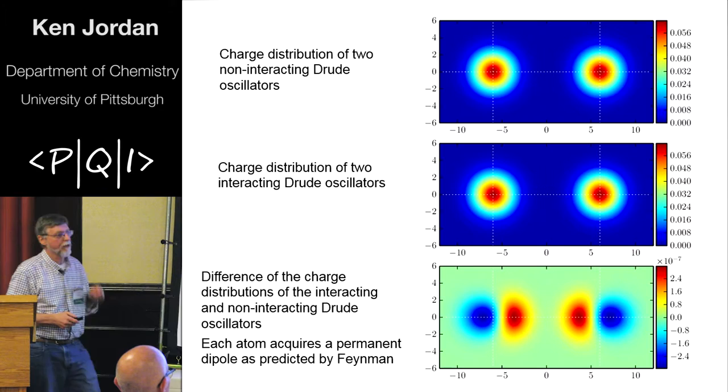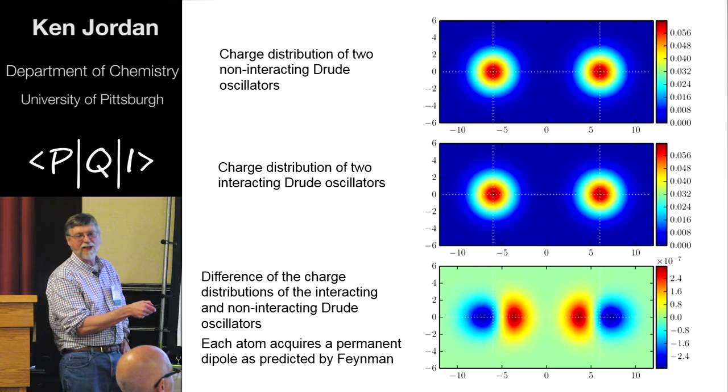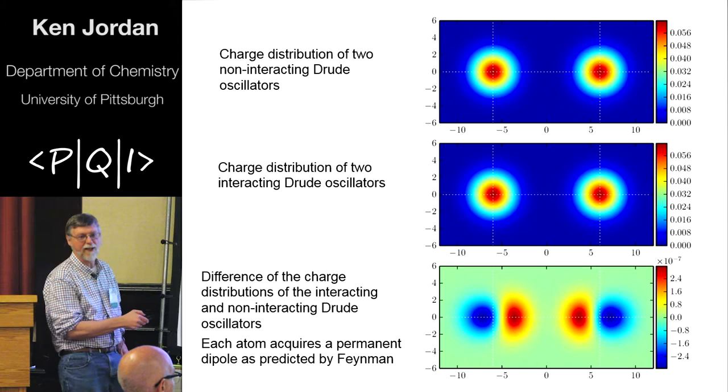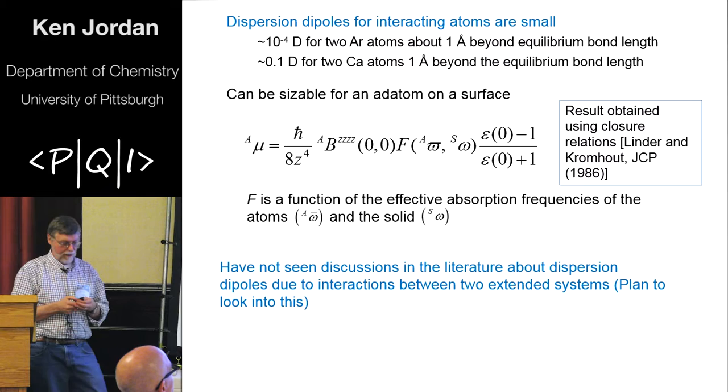Uh-oh. Are you saying three minutes? Okay, here's a picture of the charge distribution of the non-interacting atoms. Now they're interacting. They look essentially identical. You take the difference, and there's the two negative ends pointing in exactly as Feynman had predicted.